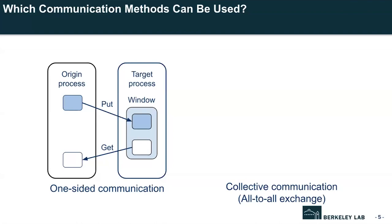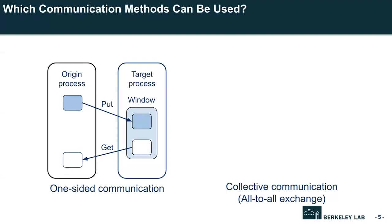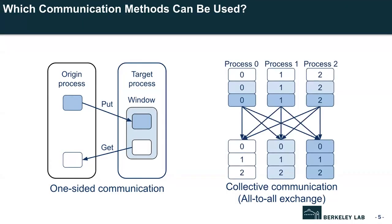The basic idea of one-sided communication is to decouple data movement from process synchronization — the origin process can obtain data from the target process memory region without requiring target process participation, asynchronously. On the other hand, collective communication involves scattering or gathering data from multiple processes simultaneously, but it implies synchronization before starting execution. Because of its high performance potential, most in-memory distributed storage systems prefer one-sided communication over collective communication.